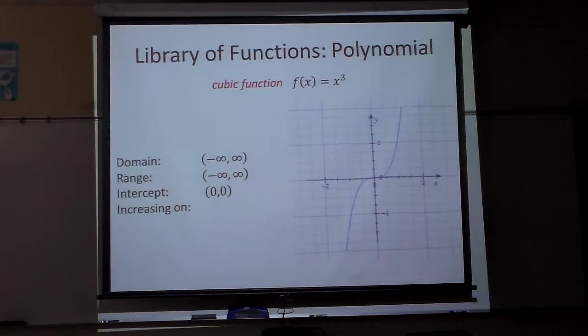There is an x and y intercept at the origin, zero, zero, and it is increasing in a sense for what? Continuously. If you read left to right, remember it's only the x values. It would be negative infinity to infinity.